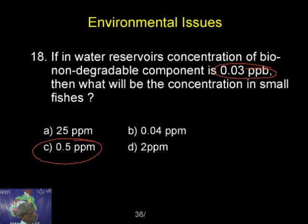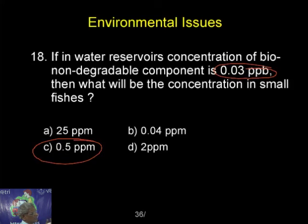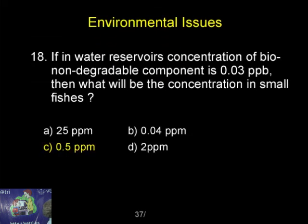In the water, it is very less. But when the grass is growing on that, the concentration is getting increased. When the cow is eating the grass, it is still getting increased. And then in the milk of the cow, it is still getting increased. And the mother who is drinking that milk — it is still getting increased. That is how it is getting magnified from one trophic level to another. This is what is called as bio magnification. So, 0.53 is the answer.